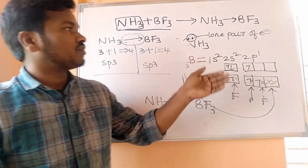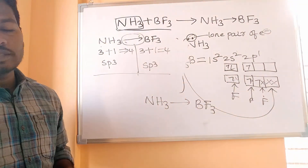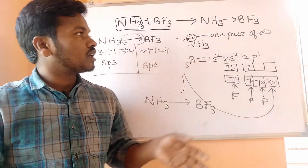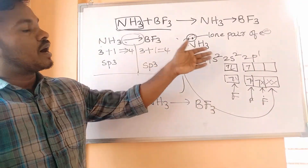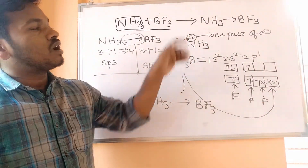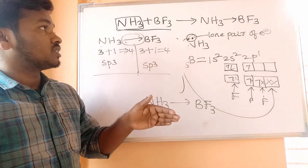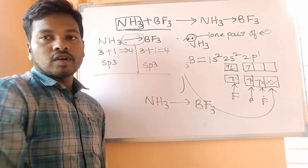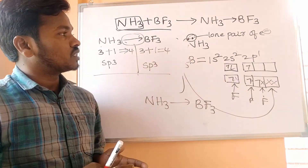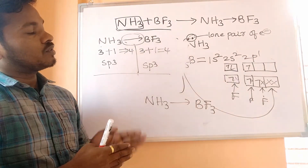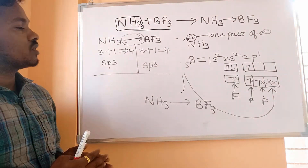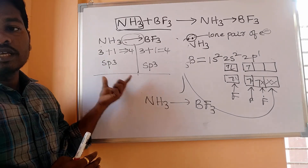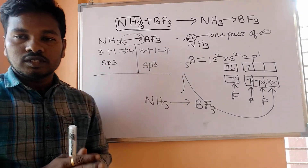In the adduct of NH3 and BF3, BF3 accepts the electron pair because it contains one vacant p orbital. Ammonia is involved because it contains a lone pair of electrons. After the reaction, the hybridization of both becomes sp3 — similar structures are shown for the adduct product.